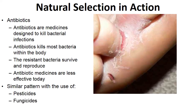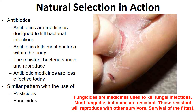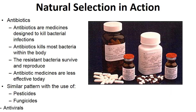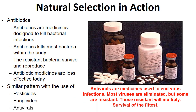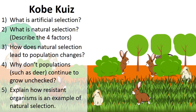We see this same pattern with fungicides — medicines used to kill fungal infections like athlete's foot. Most fungi die when a fungicide is used, but resistant ones survive and reproduce with others. The same applies to antiviral medicines: most viruses are eliminated, but resistant ones multiply. In all these cases, it is survival of the fittest.